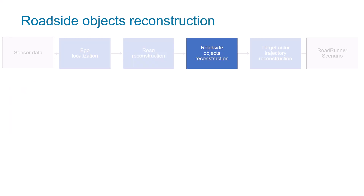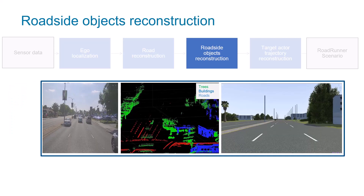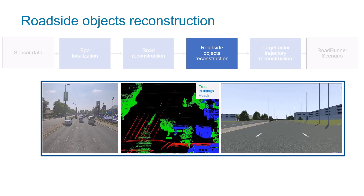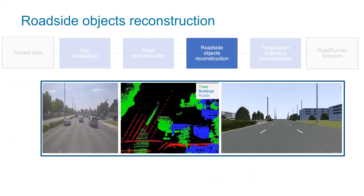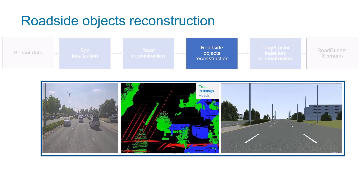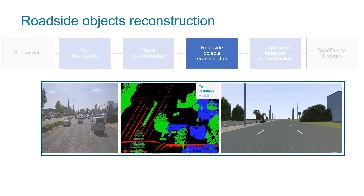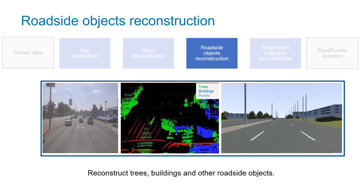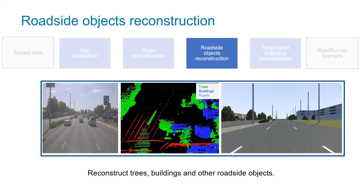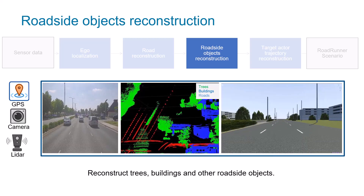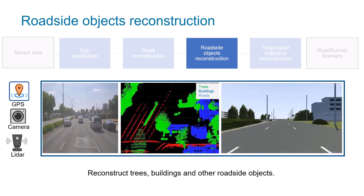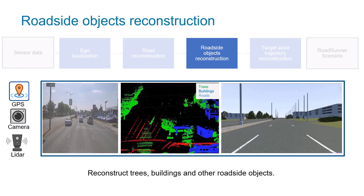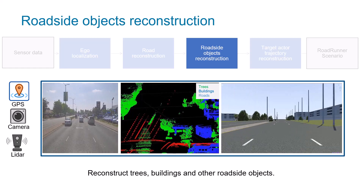In the roadside objects reconstruction step, using labeled lidar data, we can reconstruct roadside static objects such as trees and buildings. In the absence of labeled lidar data, the Scenario Builder can extract trees and buildings from raw lidar data. Additionally, it can use a combination of camera and GPS data to approximate the scene with roadside objects.